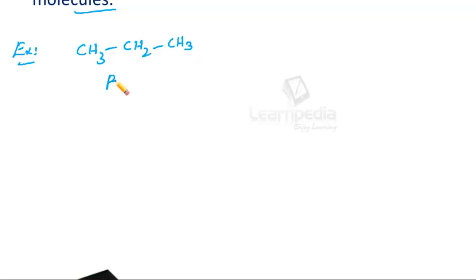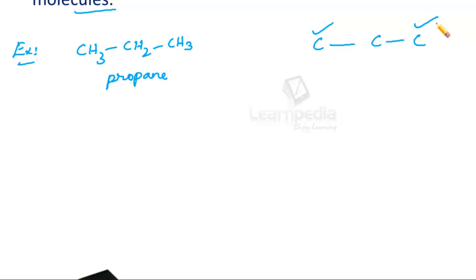If we take an example of propane, it is written as CH3-CH2-CH3. In propane, all three carbon atoms are linked with each other, and the terminal carbon atoms are completely free — meaning they are linked with hydrogen but not linked with each other in order to form a closed ring.